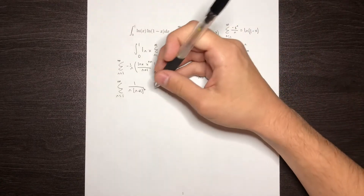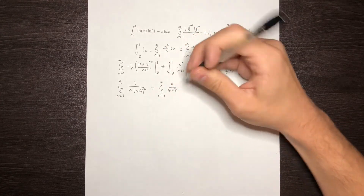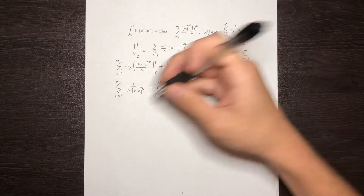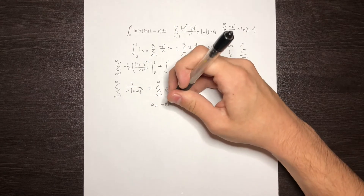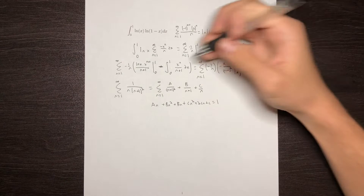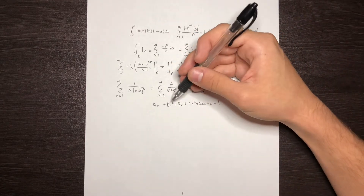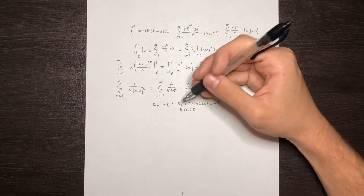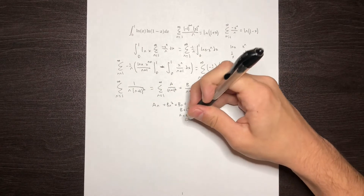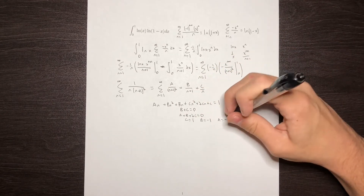In order to evaluate this summation, I'm going to use partial fractions, rewriting 1 over n times n plus 1 squared as a over n plus 1 squared plus b over n plus 1 plus c over n. Multiplying through by n times n plus 1 squared and matching coefficients: b plus c equals 0, a plus b plus 2c equals 0, and c equals 1. So c equals 1, b equals negative 1, and a equals negative 1.